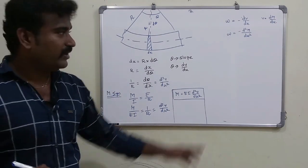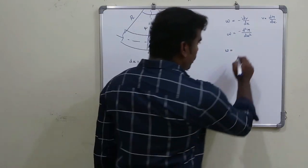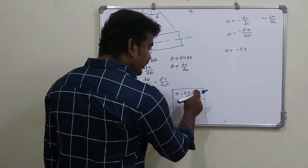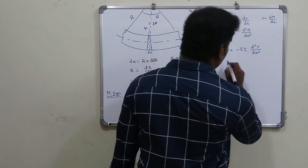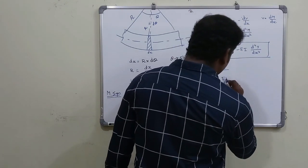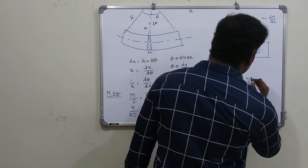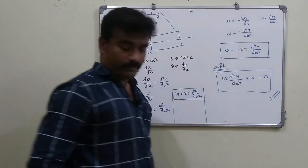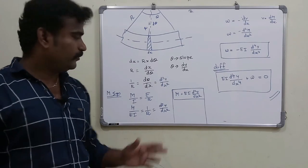Substituting, d squared M divided by dx squared is obtained. Then substituting M equals EI·d²y/dx² and differentiating twice gives EI·d⁴y/dx⁴. Therefore the beam bending differential equation is: EI·d⁴y/dx⁴ plus W equals zero. This is your beam bending differential equation.